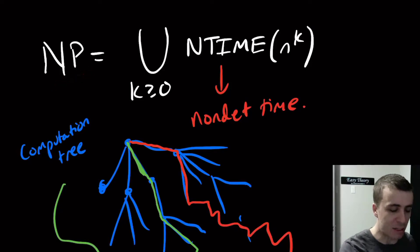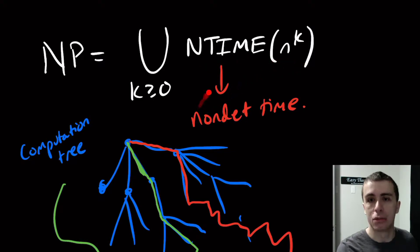Hi, so I want to talk about NP for a sec. So we defined it to be as non-deterministic polynomial time, right? So we said it was NTIME n to the k for all k at least zero and the union of all those.